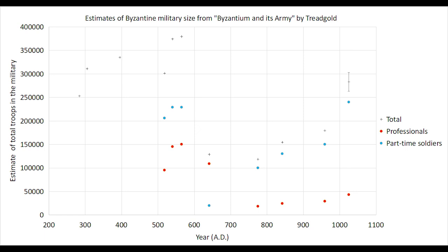And finally, 1025 — it's the data point at the very end of Basil II's reign. It's the only point with an error bar, which is what Treadgold provides. It's an extrapolation from the data from the 840s, and I think it tells that the numbers seem too high. The empire was larger, but it doesn't seem to have been that much larger. And we'll get back to that when we look at the percentages.